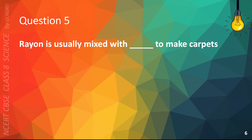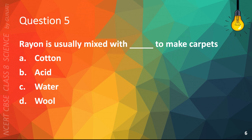Question 5. Rayon is usually mixed with blank to make carpets. A. Cotton, B. Acid, C. Water, or D. Wool. The correct answer is D. Wool.